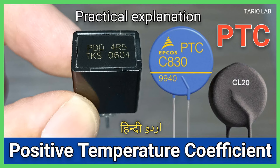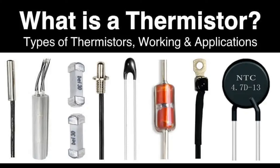At higher temperatures, the resistance continues to decrease. The relationship between temperature and resistance is typically exponential, meaning small increases in temperature can result in significant changes in resistance. As temperature increases, more electrons are excited from the valence band to the conduction band in semiconductors, increasing the number of charge carriers available and resulting in decreased electrical resistance. NTC thermistors exploit the properties of semiconductors, where the resistance is highly sensitive to changes in temperature.